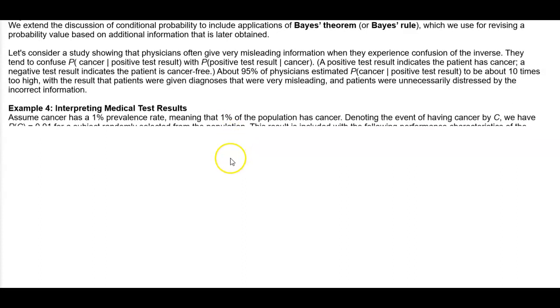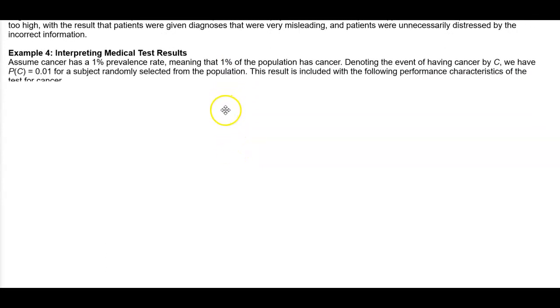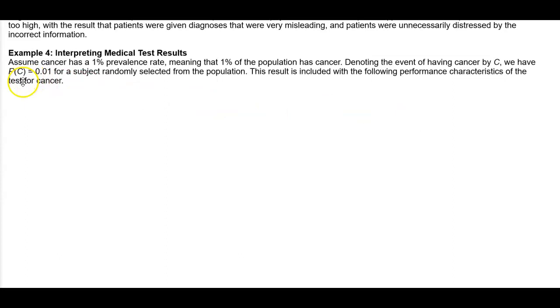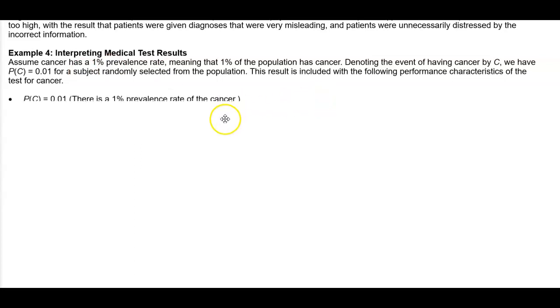For example four, interpreting medical test results. Assume cancer has a one percent prevalence rate, meaning that one percent of the population has cancer. Denoting the event of having cancer by the event letter C, we have the probability of C equal to 0.01, for a subject randomly selected from the population.